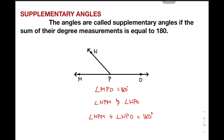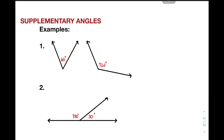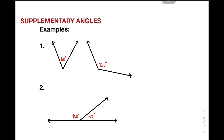Since the sum of angle NPM and angle NPO is equal to 180 degrees, they are definitely an example of supplementary angles. For our first example, we have two angles with measurements. When you add 60 degrees plus 120 degrees, it gives you a sum of 180 degrees. So example number one is an example of supplementary angles.